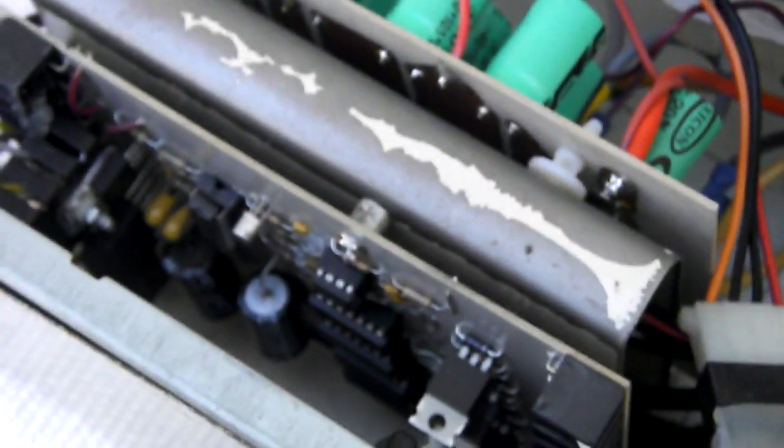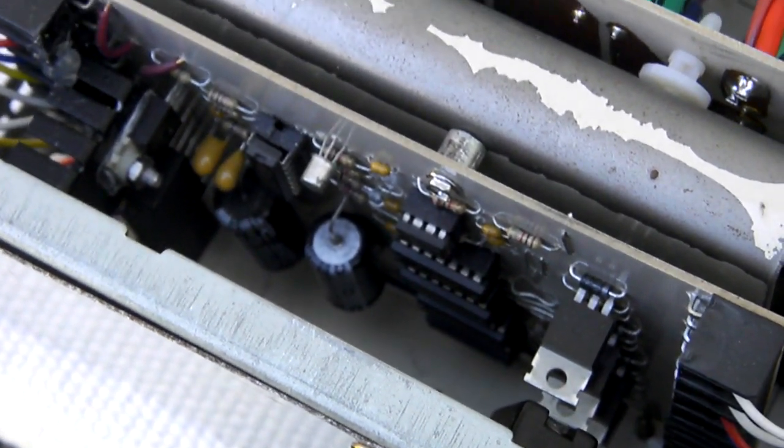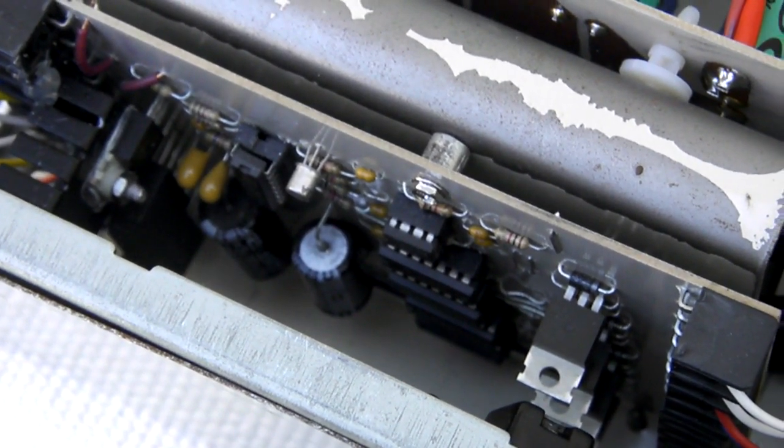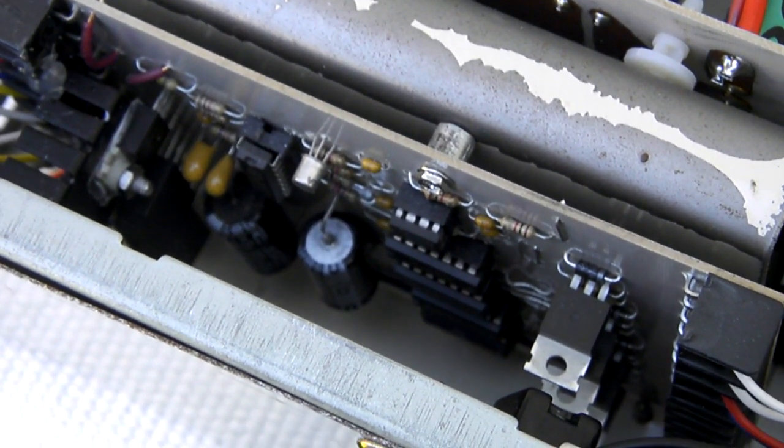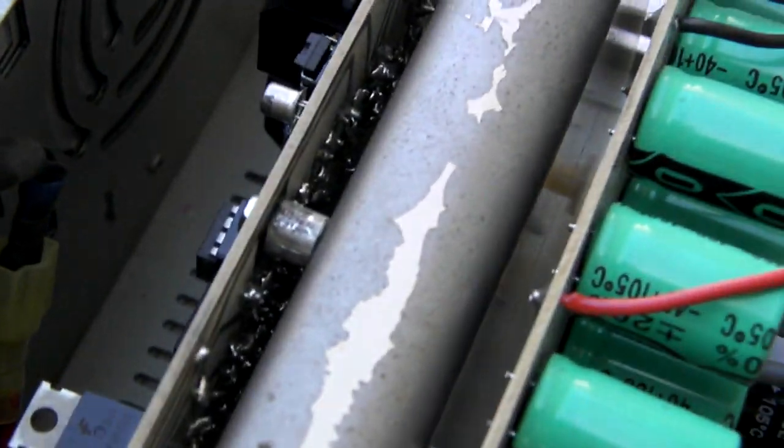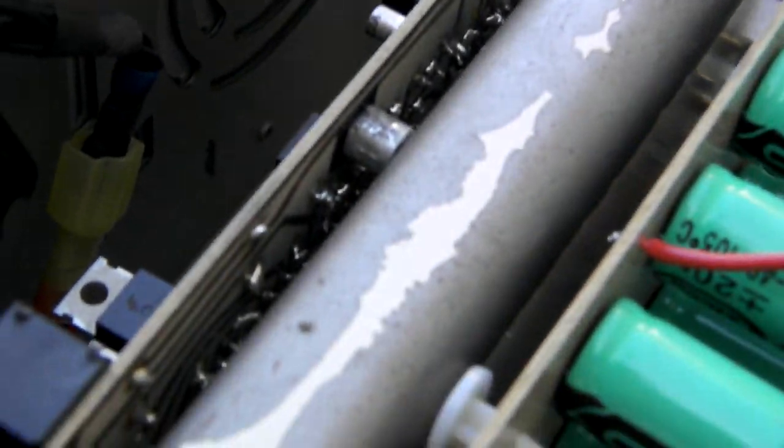As we come in closer, we see a couple of circuit boards. One for the control circuit. Nowadays, the control side of this circuit board would probably be made with an Arduino. That's the way things are, it seems.